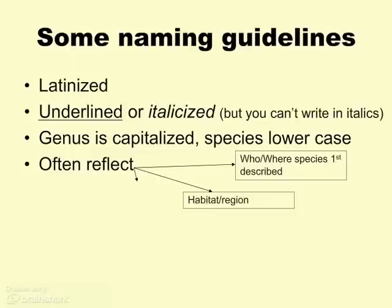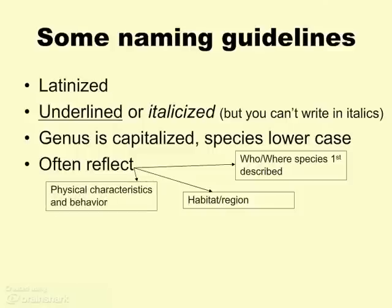Oftentimes they'll describe the habitat or the part of the world where the organism comes from — whether geographical, like Japonica, which means from Japan, or Maritimus, which deals with the ocean. Most often what we're dealing with in names are physical characteristics and behavior: Latin and Greek forms that describe the physical characteristics and behavior that an organism might have.